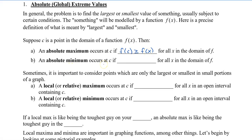An absolute minimum occurs at c if f of c is less than or equal to f of x for all x in the domain of f. Similarly, we could say that the y value at that c value is smaller or equal to all the other y values in the function. Now, sometimes it is important to consider points which are only the largest or smallest in small portions of a graph. These are called local or relative. A local or relative maximum occurs at c if f of c is bigger or equal to f of x for all x in an open interval containing c. A local or relative minimum occurs at c if f of c is less than or equal to f of x for all x in an open interval containing c. So the y value is smallest in that little area that we're looking at.